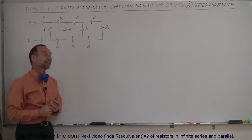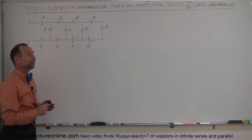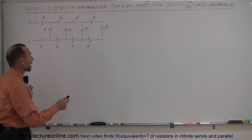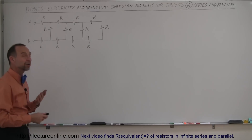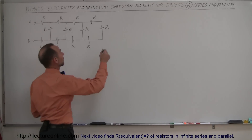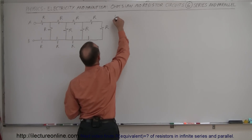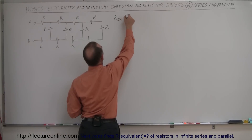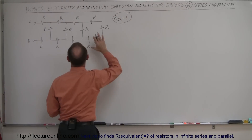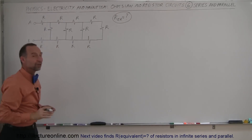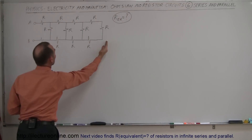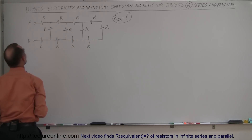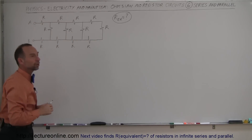Welcome to Electron Online. Here's our next example of how to take a circuit with resistors and simplify it down to a single equivalent resistor. What we're trying to find is the equivalent resistance of this particular circuit. When you have a circuit that looks like this, the best way to do it is to start from the very back and work yourself to the front where you have the terminal connectors.